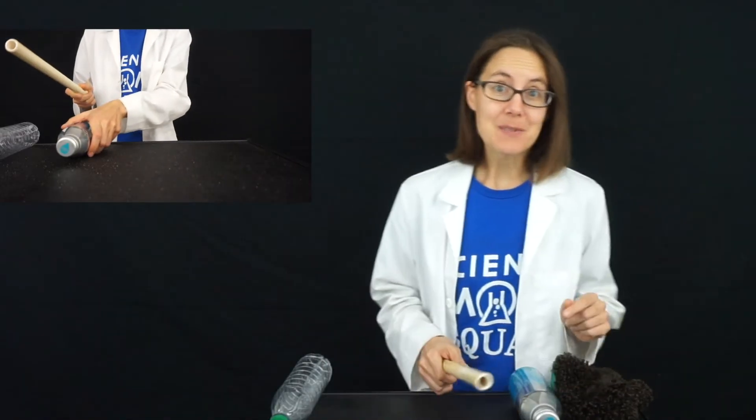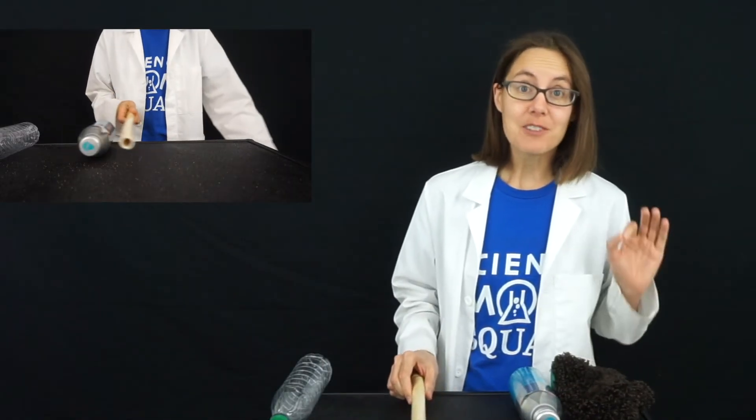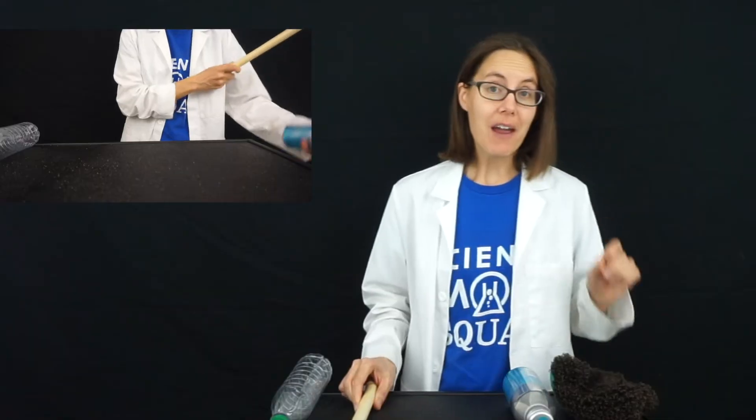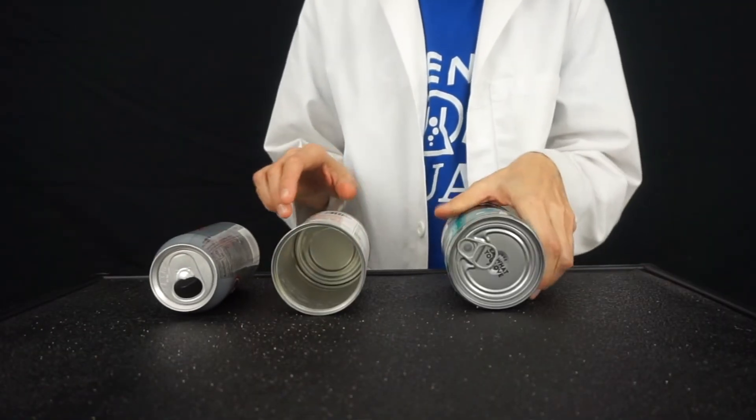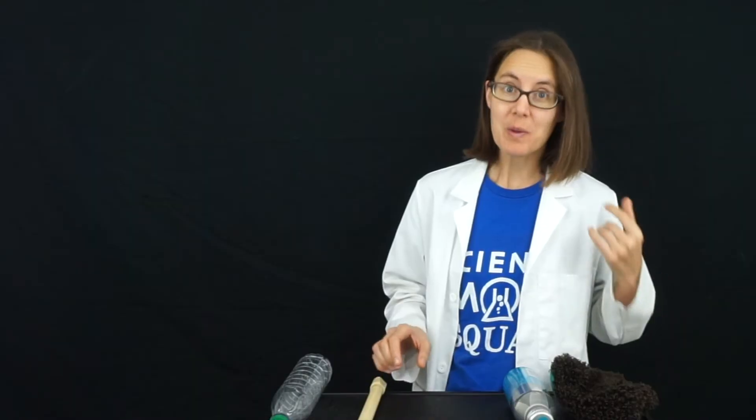But you can make it an experiment by testing cans of different weights. If we compare a soda can, an empty peaches can, and a can that is full of soup, then you'll see that they behave very differently when we bring the same pipe next to each of them.